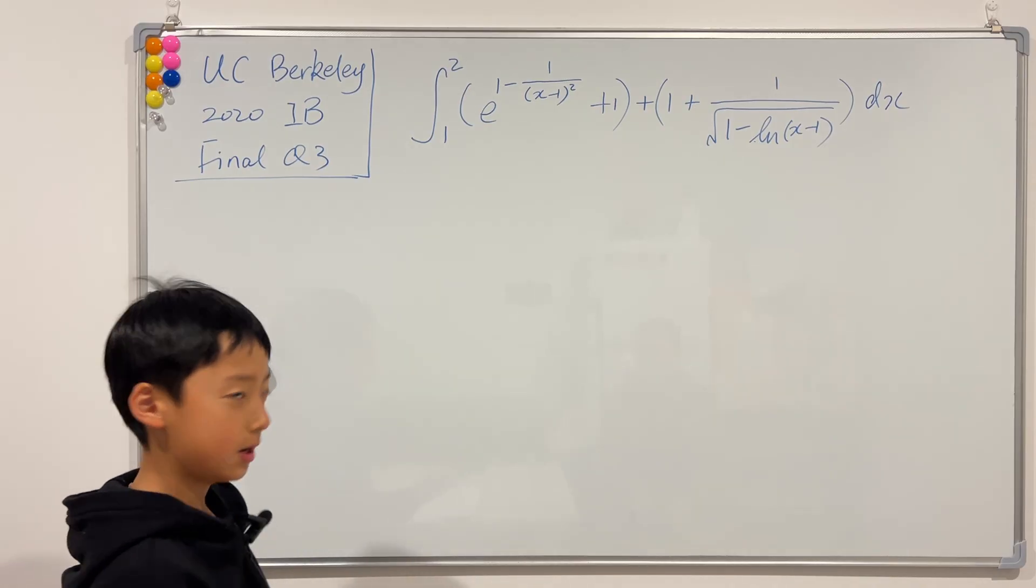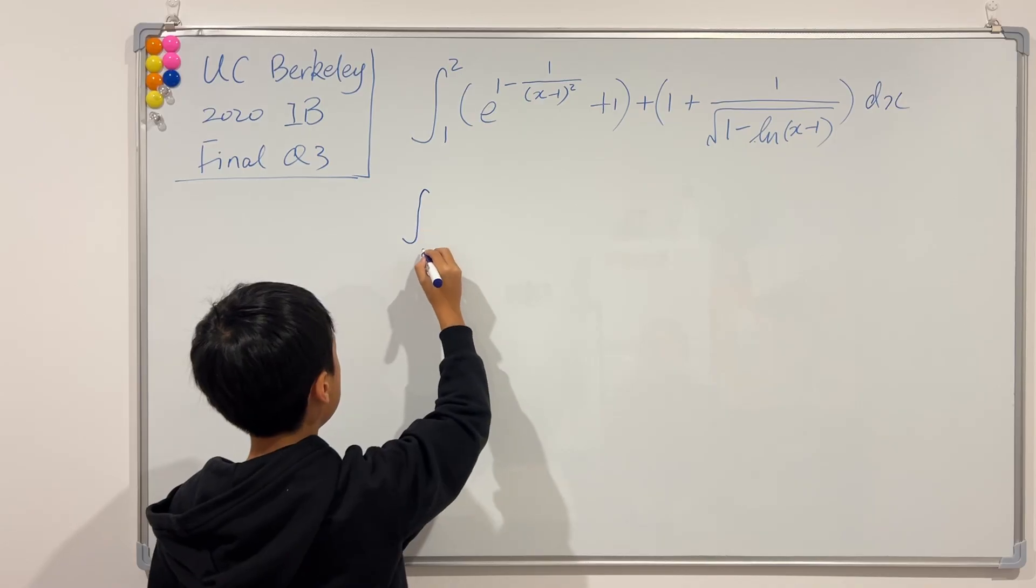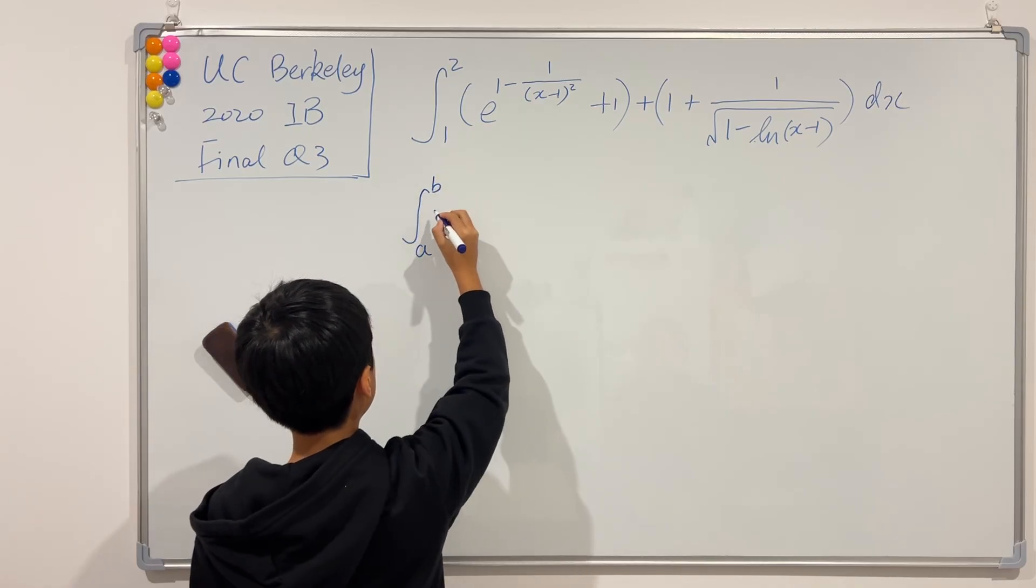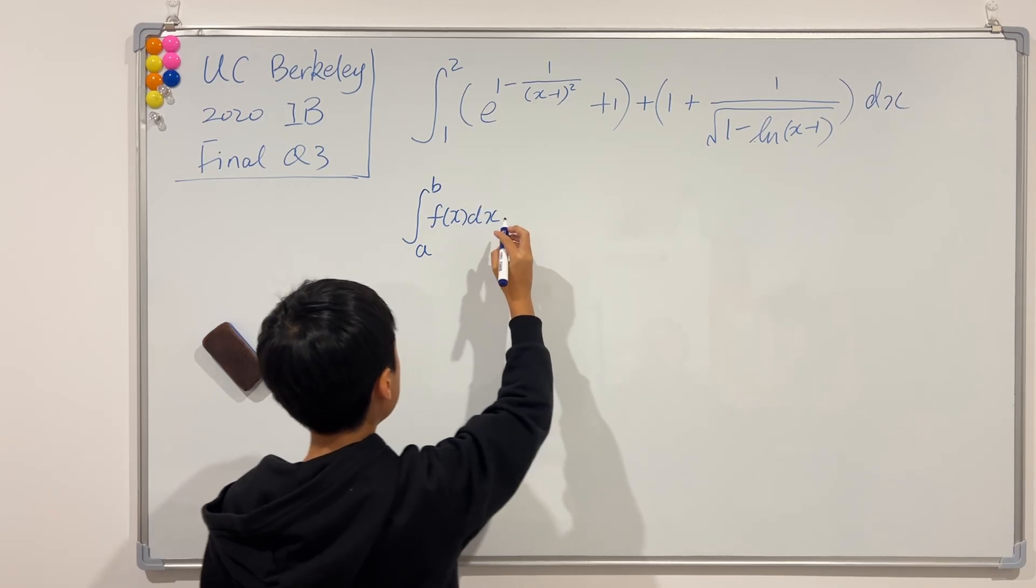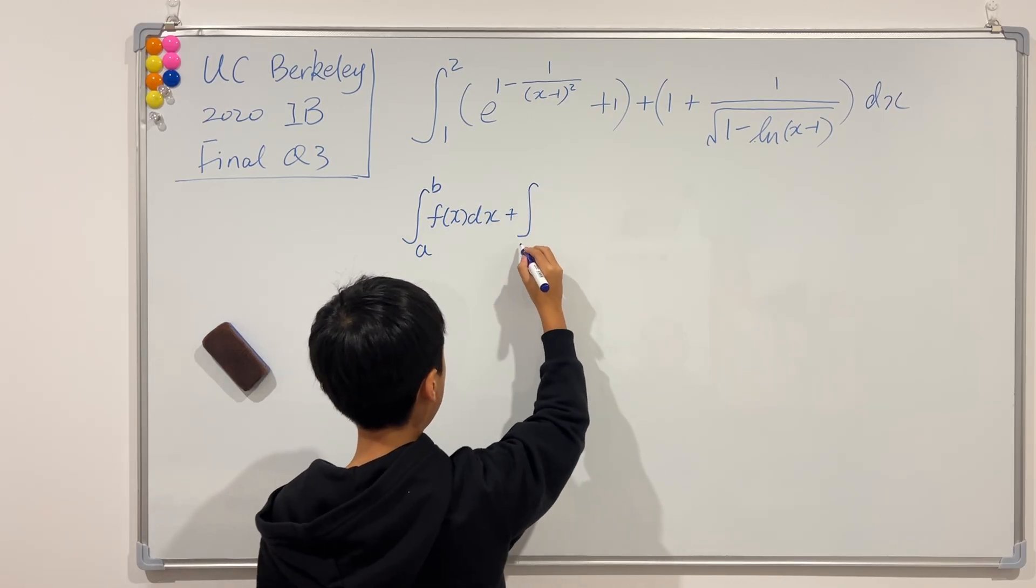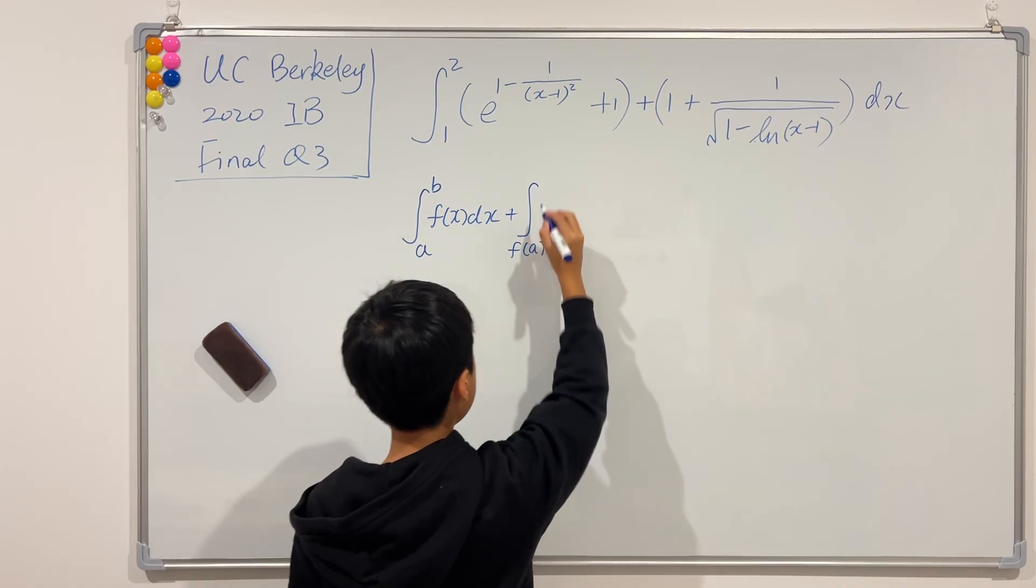This was the formula we had: the integral from a to b of some function, and we had another integral from f(a) to f(b).